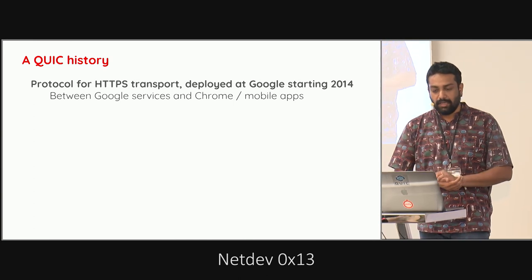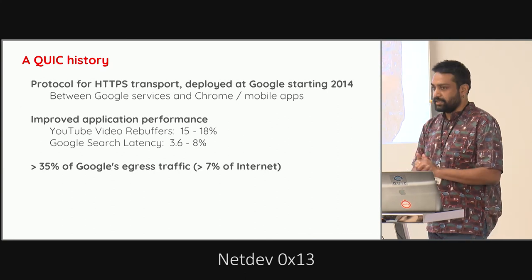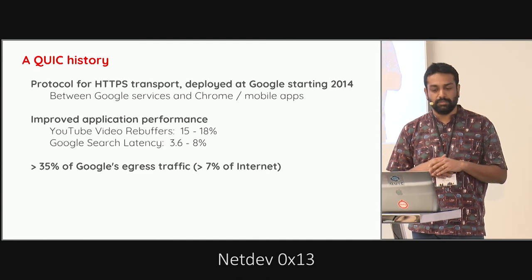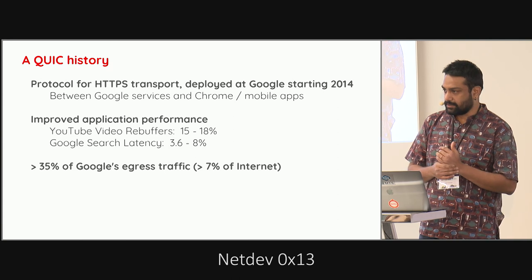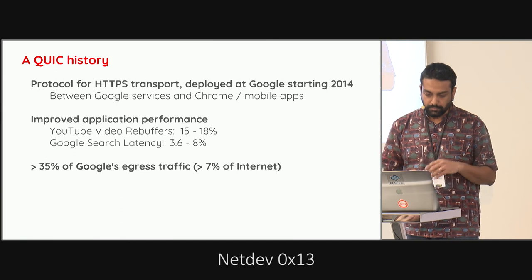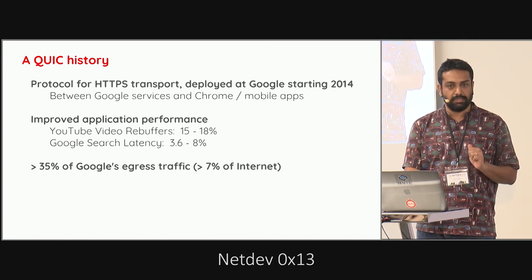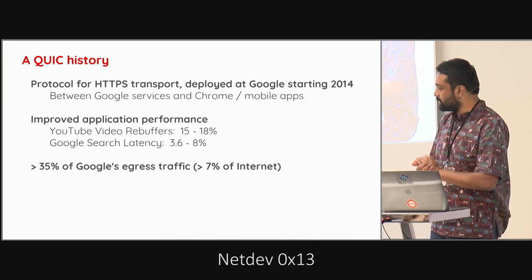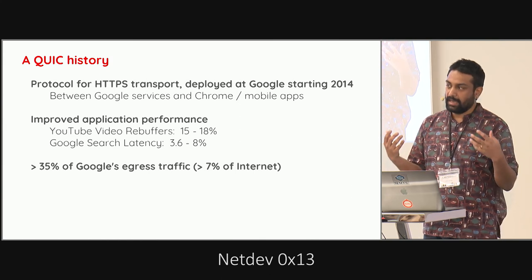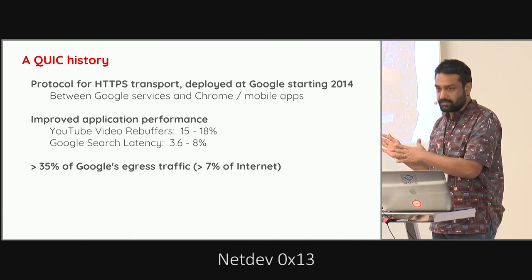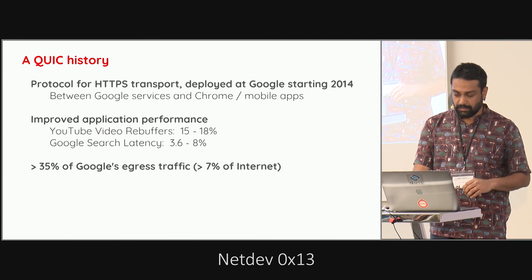The performance benefit we started to see was good — so good that we turned it on to basically 100% of what we could, which meant more than 35% of Google's egress traffic in bytes was QUIC. These numbers are from two years ago. It improved application performance, specifically YouTube video rebuffers and Google search latency by quite a bit. These numbers are substantial partly because they're end-to-end measures — changing a transfer protocol changed end-to-end application-level quality of experience metrics significantly. Moving Google Search latency — one of the most optimized applications on the planet — by that amount was quite significant.